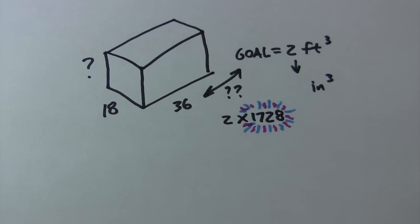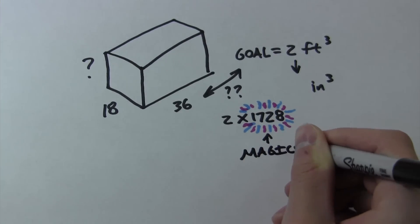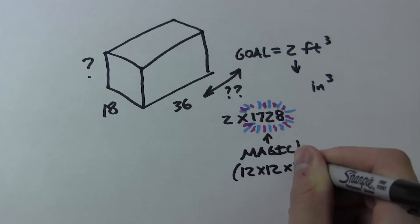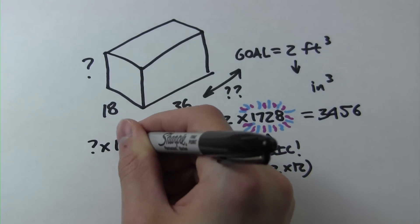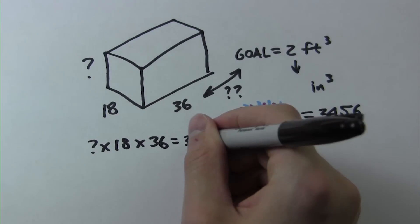So we're going to use this to determine how many cubic inches we need to have our goal of two cubic feet. So we simply multiply 2 times 1728, which gives us 3,456 cubic inches that are needed for this enclosure.